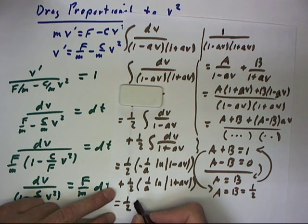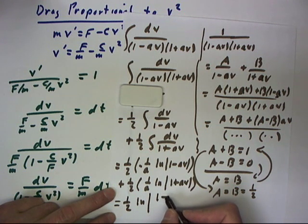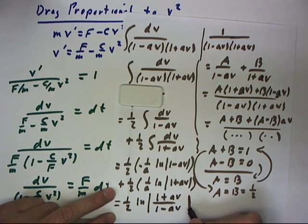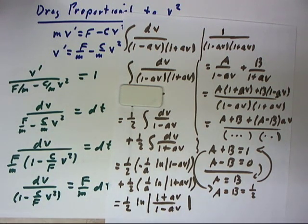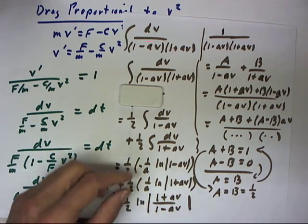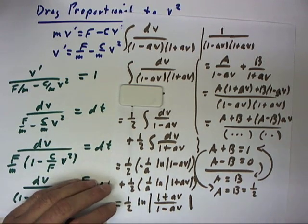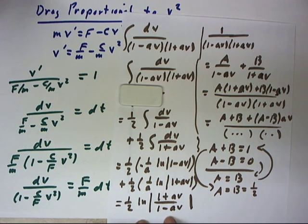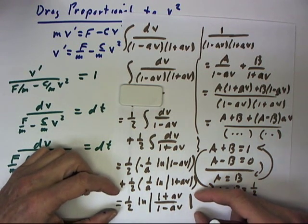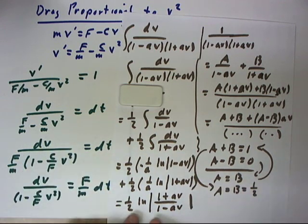This is going to be 1 half the natural log of the absolute value of 1 plus av over 1 minus av. Now, we're using the rules for combining logarithms, the rules of logarithms and exponents, which are inverse to each other. This is something that you encounter very commonly with integration by parts.